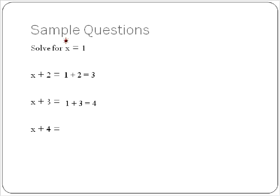For our next one, we do the same thing. We substitute in 1 for x, and it becomes 1 plus 3, which is equal to 4. And for our final one, we will then change that into 1 plus 4, which is equal to 5.